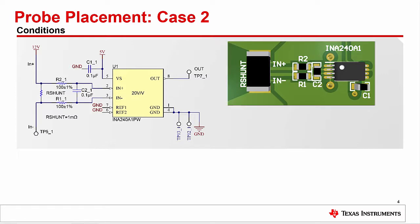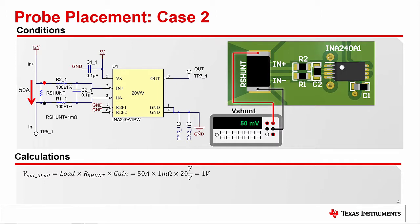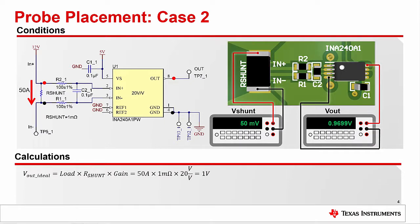Now, let's consider a different case involving the INA240 with a 20 volt per volt gain. In this instance, we are trying to measure a 50 amp load. Based upon our calculations, we expect the output to be 1 volt. Yet, we measure a value that is 30.1 millivolts lower, suggesting our measured load is 48.495 amps.